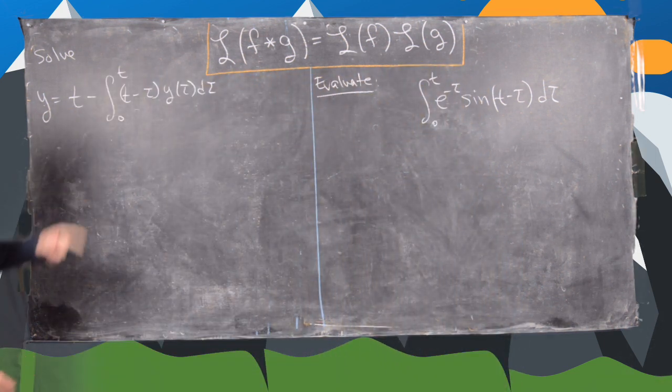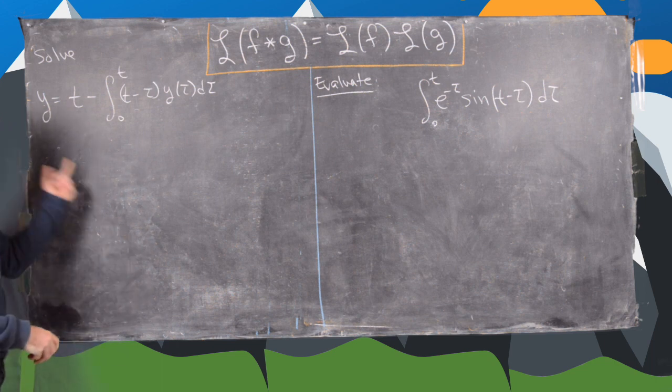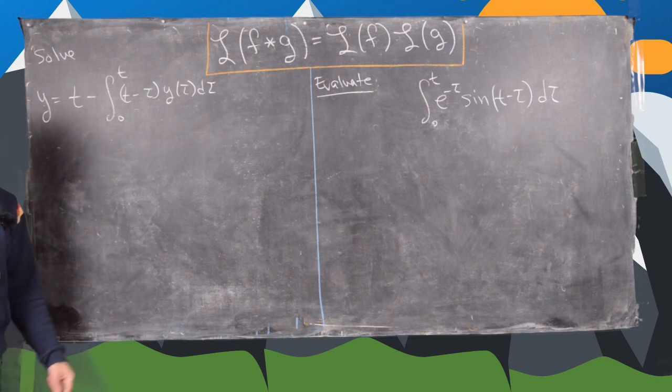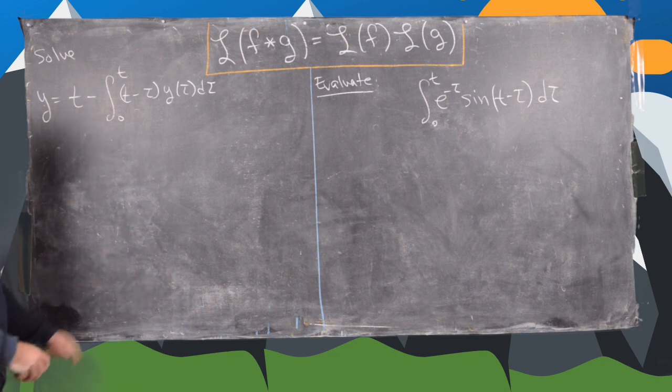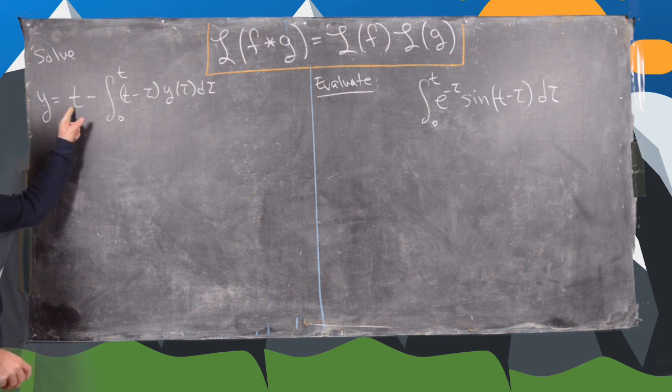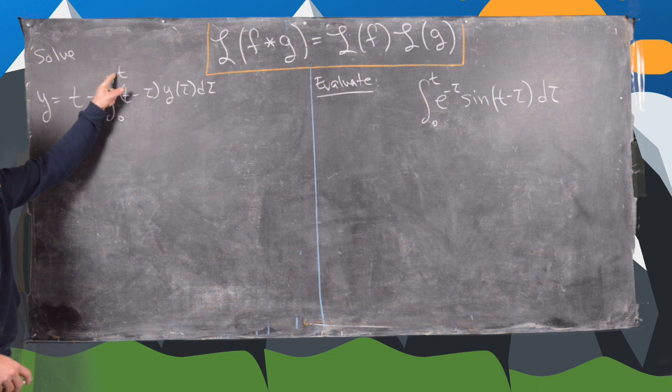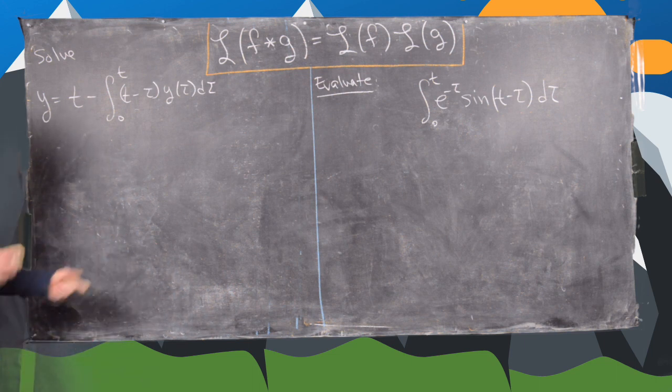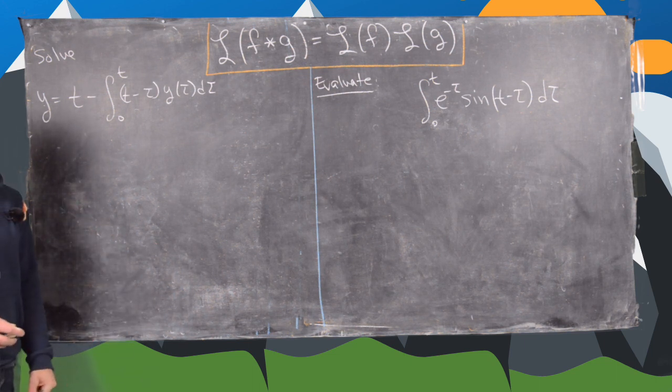You might think the best thing to do would be to take a derivative with respect to t of both sides and turn this integral equation into a differential equation, but you'll end up with a problem. You'll get y prime on this side, you'll get one on this side, but then this will collapse because when you take the derivative with respect to t, you're going to plug t in for tau, but you'll get t minus zero, which will be zero, and that will make a lot of the information disappear.